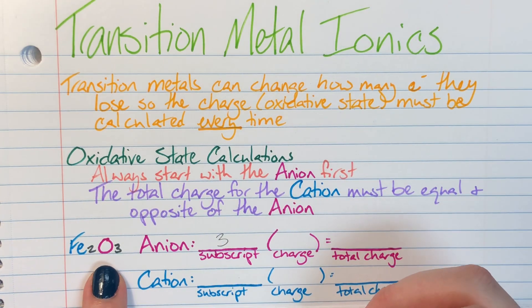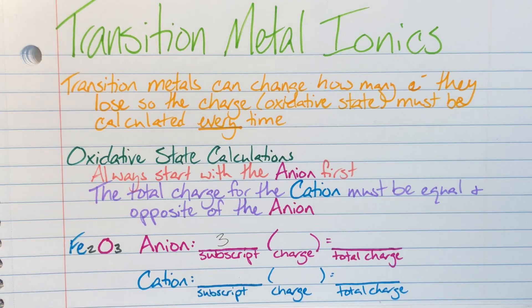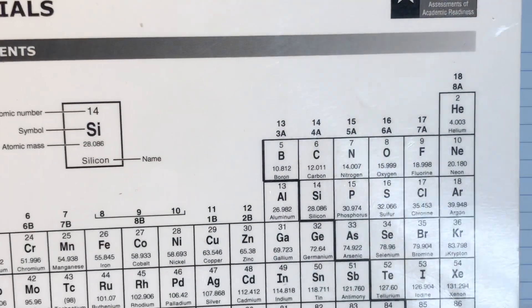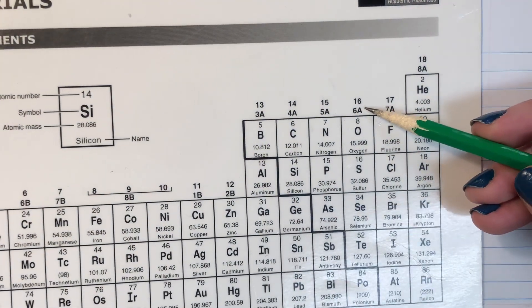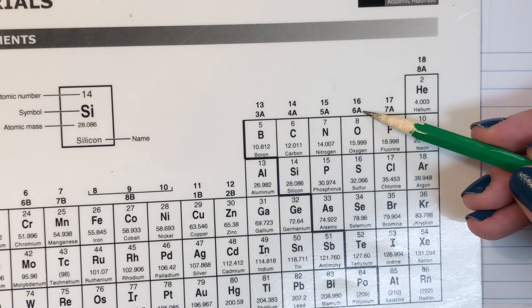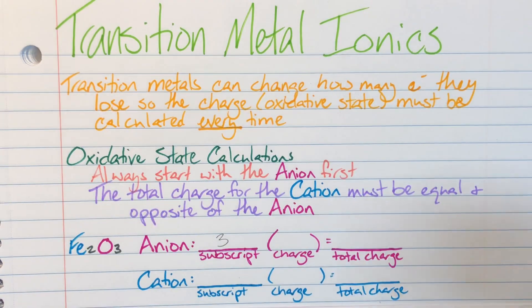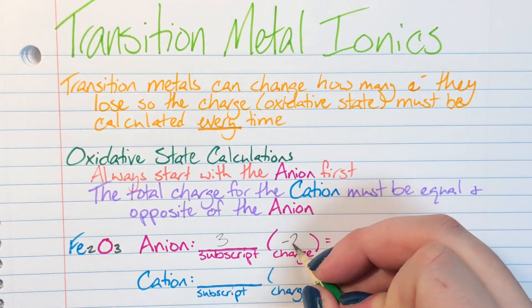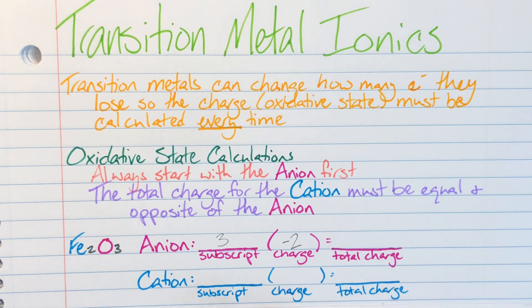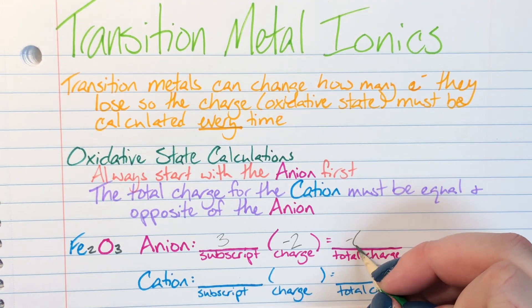My anion is oxygen. I can go to the periodic table. I can see that oxygen is in column six, which means it has six valence electrons, which means I am going to go ahead and steal two valence electrons. So its charge is going to be negative two. And then I am going to go ahead and multiply three and negative two, and that's going to give me negative six.